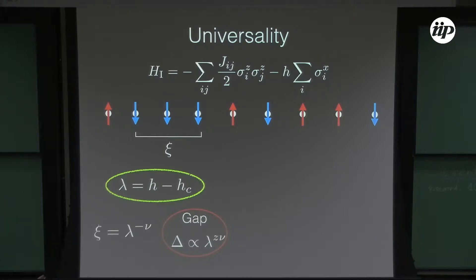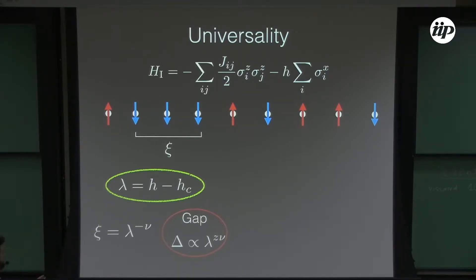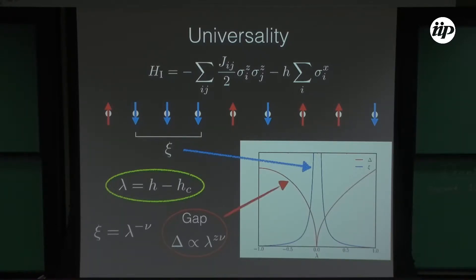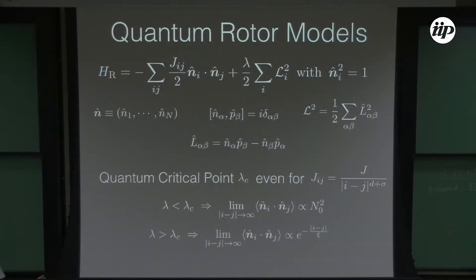I'm going to find the scaling of two quantities, which is enough to describe all other universal scalings. These are the correlation length of my system, which diverges at the critical point with exponent ν, and the gap — the difference between the energy of the ground state and the first dynamically accessible excited state — which closes like λ to some z·ν power. The gap closes at the critical point and the correlation length diverges.